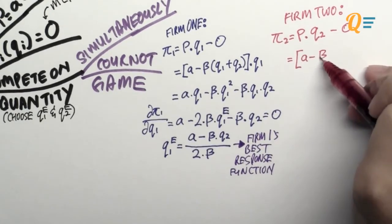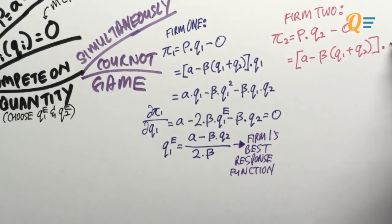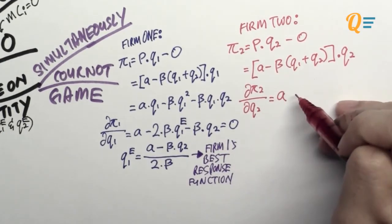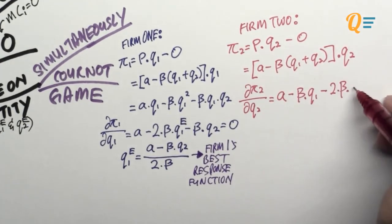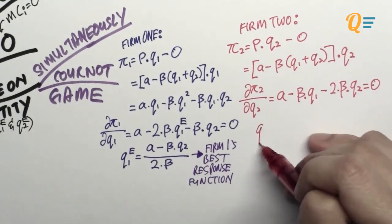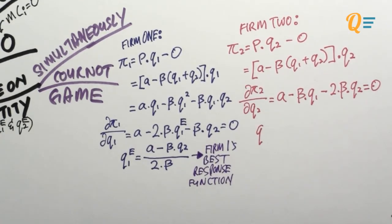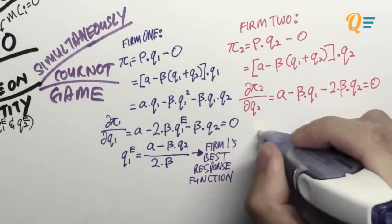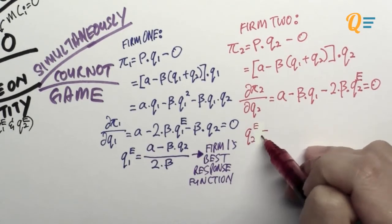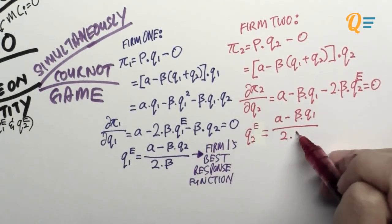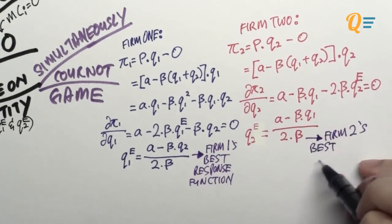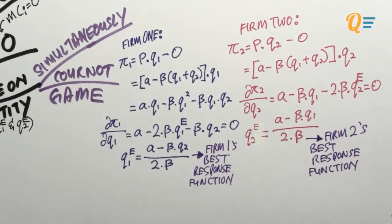Now let's look at firm 2. We take the profit function — price multiplied by quantity as determined by the demand function — minus zero cost. We maximize by differentiating with respect to Q2, putting E on top of Q2 to show this is the equilibrium for firm 2. Q2E equals a similar expression to Q1E, and this is known as firm 2's best response function.